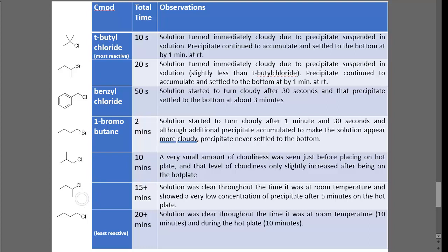Here we've got our 2-chlorobutane — that is going to be the third slowest. We did see a little bit of precipitate form because we are forming a secondary substrate. Then 1-chlorobutane was the slowest to react — even though it has the 1,2-hydride shift potential, we're still initially on a primary carbon, and with that 1,2-hydride shift we're only forming a secondary substrate.